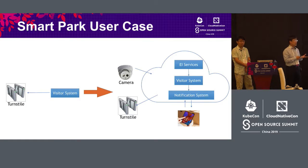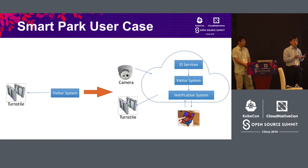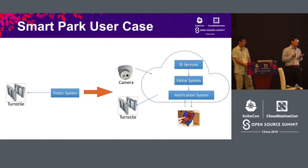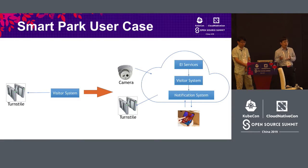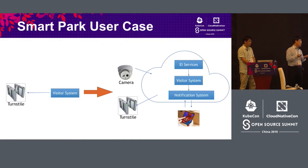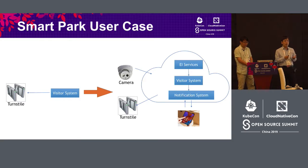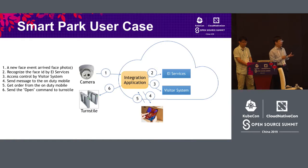Let's imagine that if we can integrate all kinds of visitor systems, the turnstile system, and the car system together with AI, we might have new applications in the smart park. For example, scan your face and then you can be authorized. The camera and the turnstile are really simple systems, but we can have an integration platform to connect the camera data together, then via camera recognition, recognize the person, and in the visitor system determine whether a person can be authorized to go through or not.